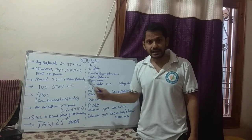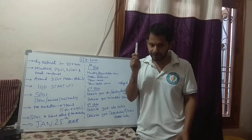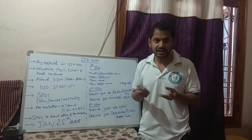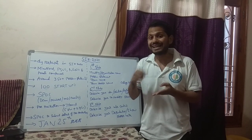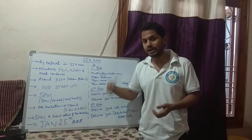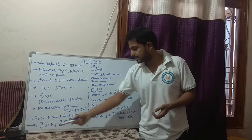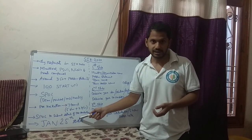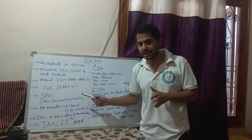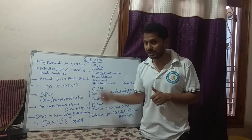After the SPOC conducts the pre-hackathon, they have to submit details to the SIH portal — including the date the hackathon was conducted in the college, photographs, details of any invited judges, and the criteria followed to select the seven teams. The idea submission date is January 25th — they are not going to extend it this time. Since every college submits only seven teams, January 25th is the hard deadline.